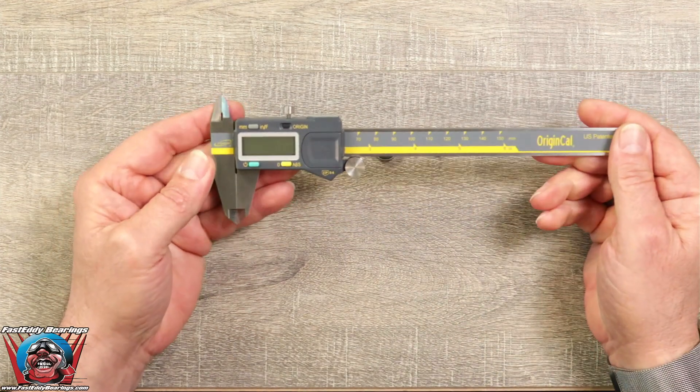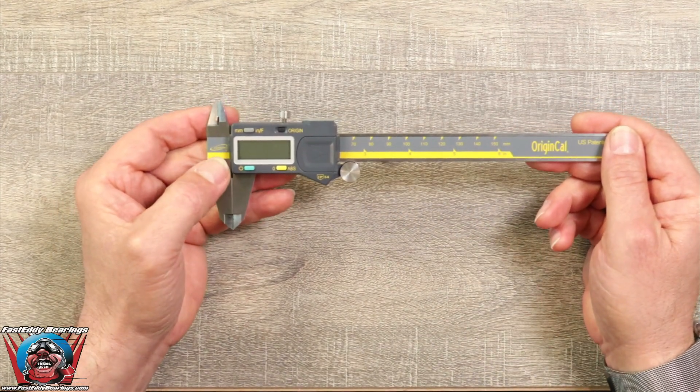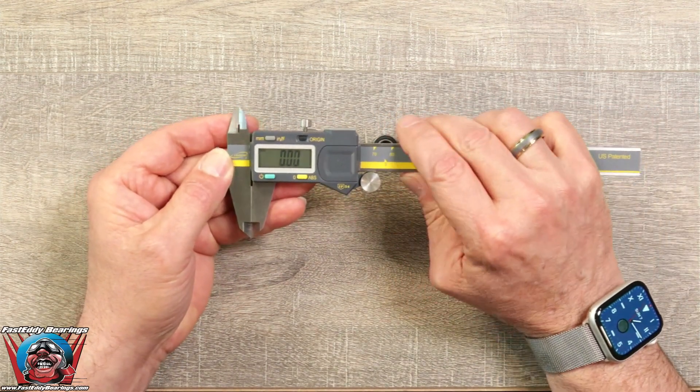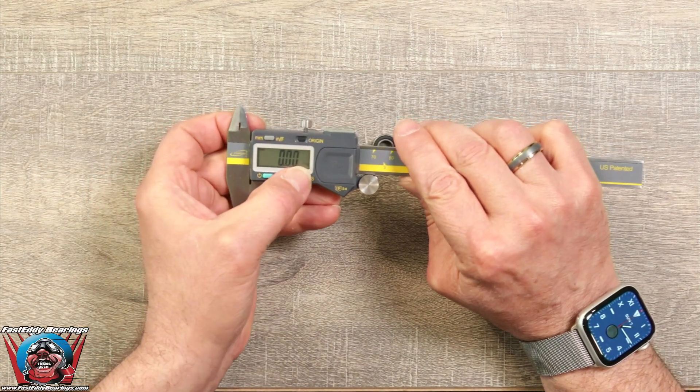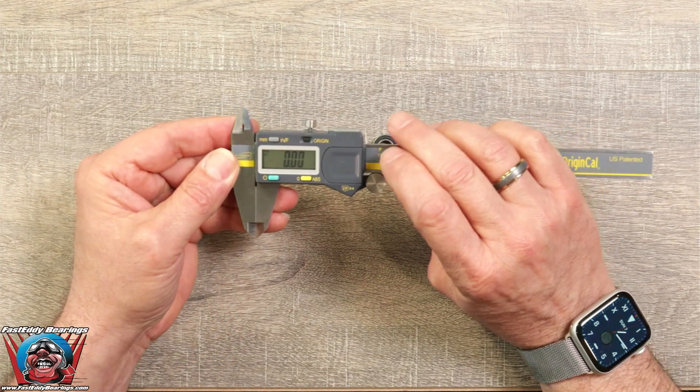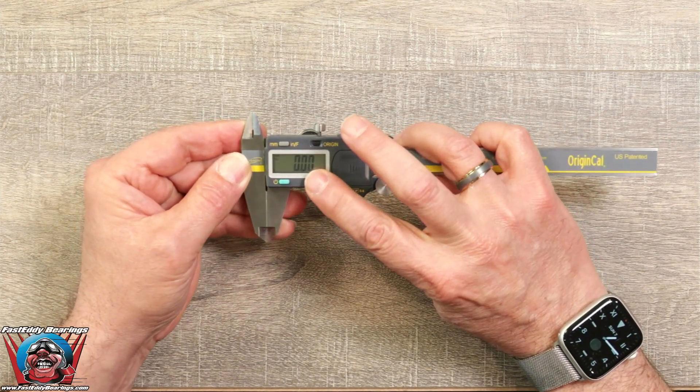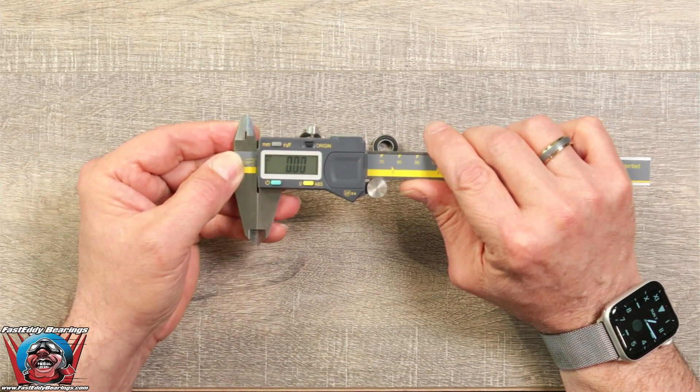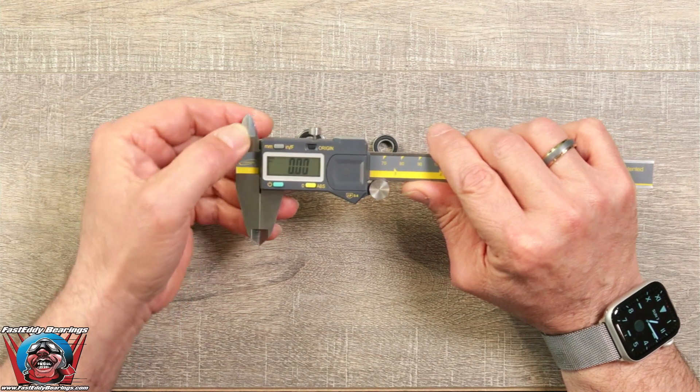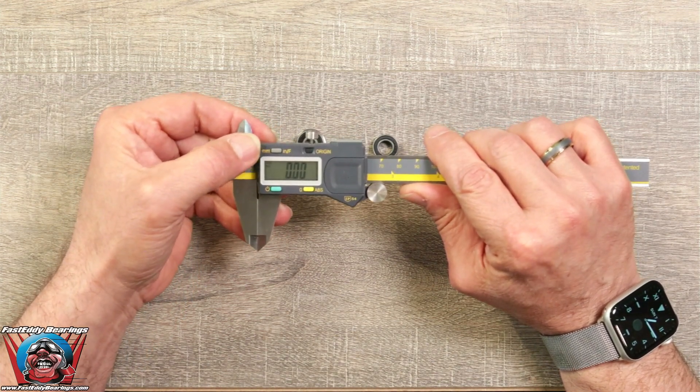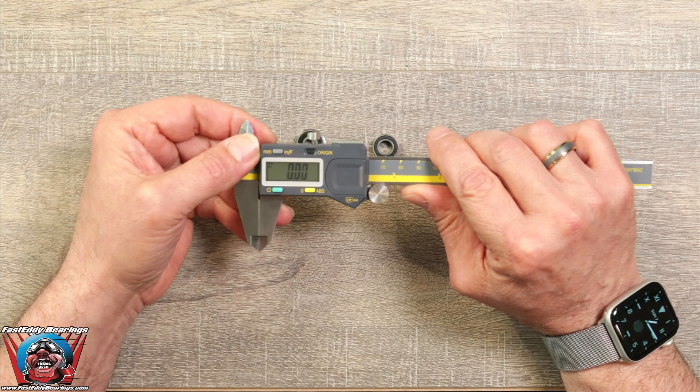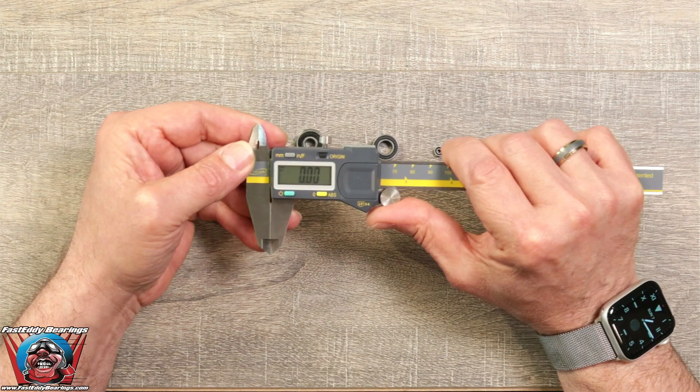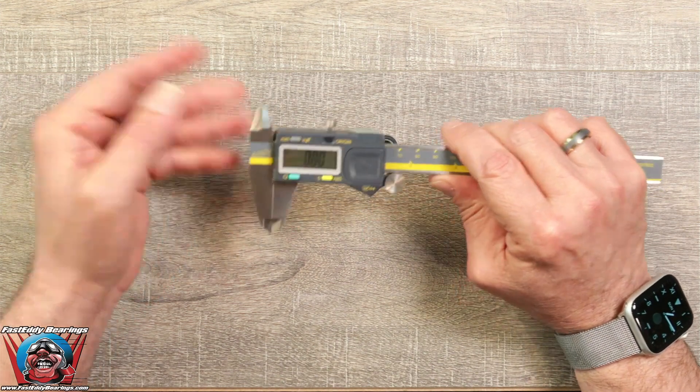So the first thing that we're going to do is we're going to turn our caliper on, make sure that it's closed, and then we're going to zero it out. Most of the calipers are going to have a zero button on there, and we just want to make sure that when we're closed, it's zeroed out. Also, there are several different variations on these, but this one will also do millimeters or inches. So what we want to do at this point is make sure that we are set on millimeters.